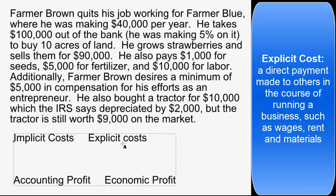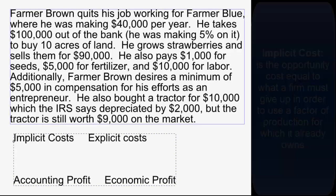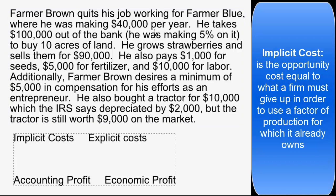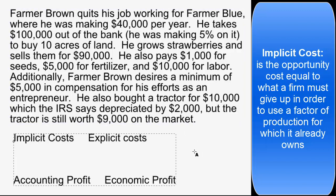Let's look at these different costs and identify which involve Farmer Brown taking money and handing it to someone else. The $40,000 he was making before he quit — is he going to take $40,000 out of his pocket and hand it to someone else this year? No. That's money he won't make now, but it's not money coming out of his pocket visibly moving to someone else's pocket, so it's not an explicit cost.